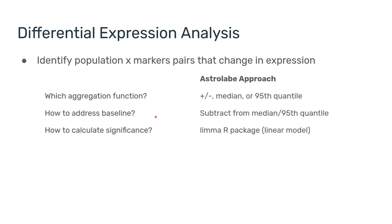As before, I'm showing the approach that AstroLabe takes. And actually, AstroLabe is quite flexible in that regard. We allow you to define the positive and negative through what we call the profiling level, or you can choose between the median and the 95th quantile when customizing your experiment. For the baseline, we can subtract it from the median and 95th quantile. If you have an unstimulated sample or a reference spike-in, then we can use that to deal with batch effects.